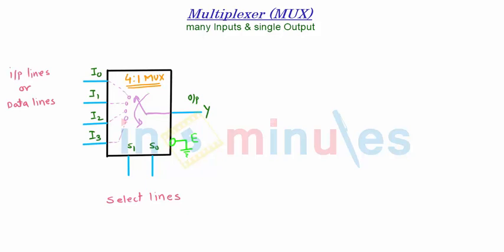Here is an example of a 4 to 1 MUX. Let's say there are 4 input lines I0, I1, I2, I3 and 2 select lines S1 and S0.